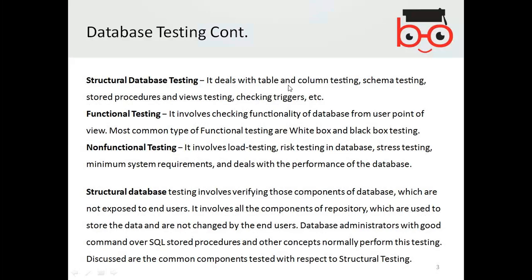Structural testing deals with tables and column testing, schema testing, stored procedures and view testing, and checking triggers. Functional testing involves checking the functionality of the database from the user's point of view. The most common types of functional testing are white box testing and black box testing. Non-functional testing involves load testing, risk testing, stress testing, and database performance testing.